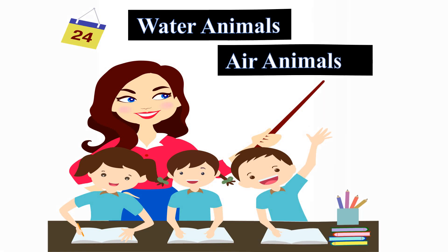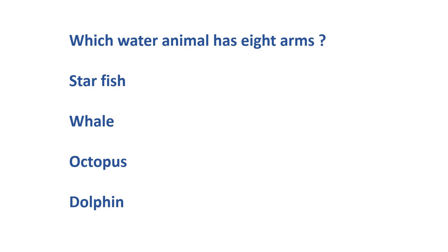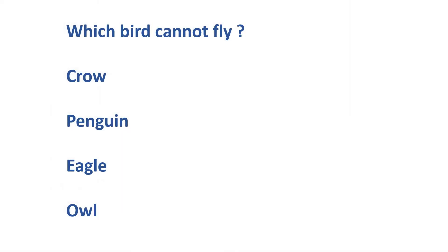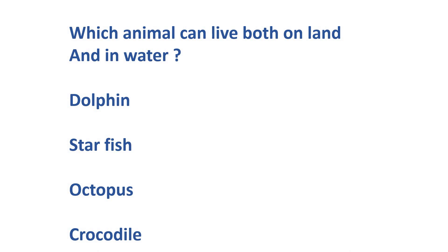Now it's time to see what we have learned through MCQs. First question: Which water animal has 8 arms? Options are starfish, whale, octopus, or dolphin. The correct answer is octopus. Next: Which is the biggest water animal? Options are blue whale, parrot, peacock, or crow. The correct answer is blue whale. Next: Which bird cannot fly? Options are crow, penguin, eagle, or owl. The correct answer is penguin. Next: Which animal can live both on land and in water? Options are dolphin, starfish, octopus, or crocodile. The correct answer is crocodile.